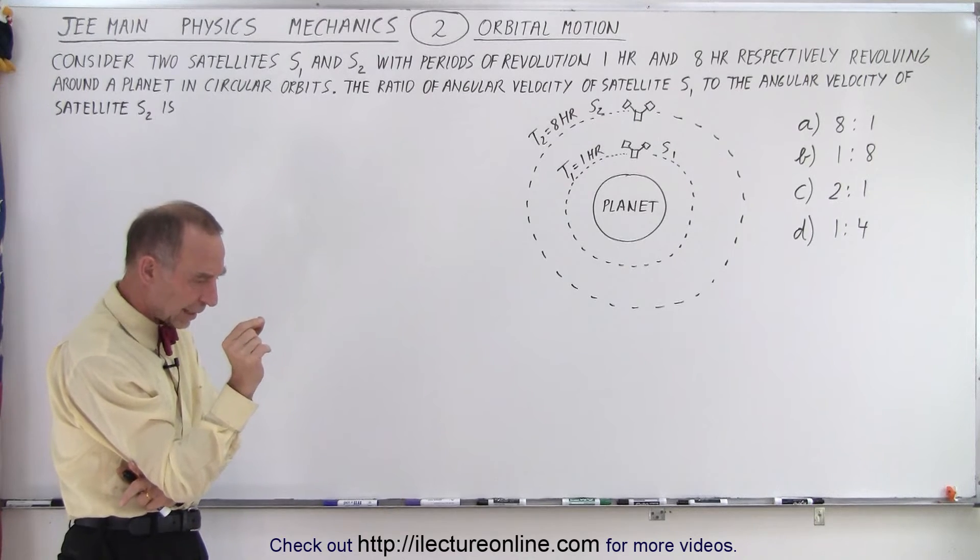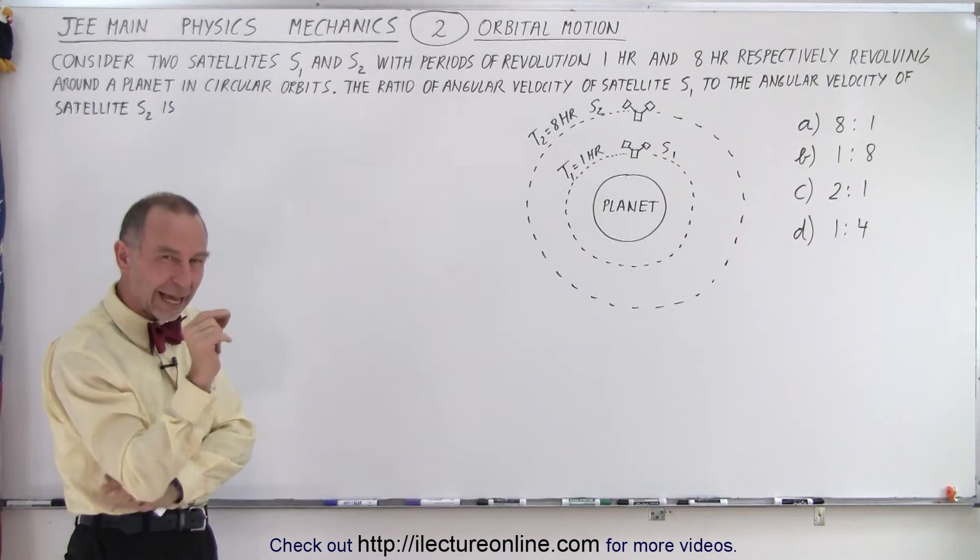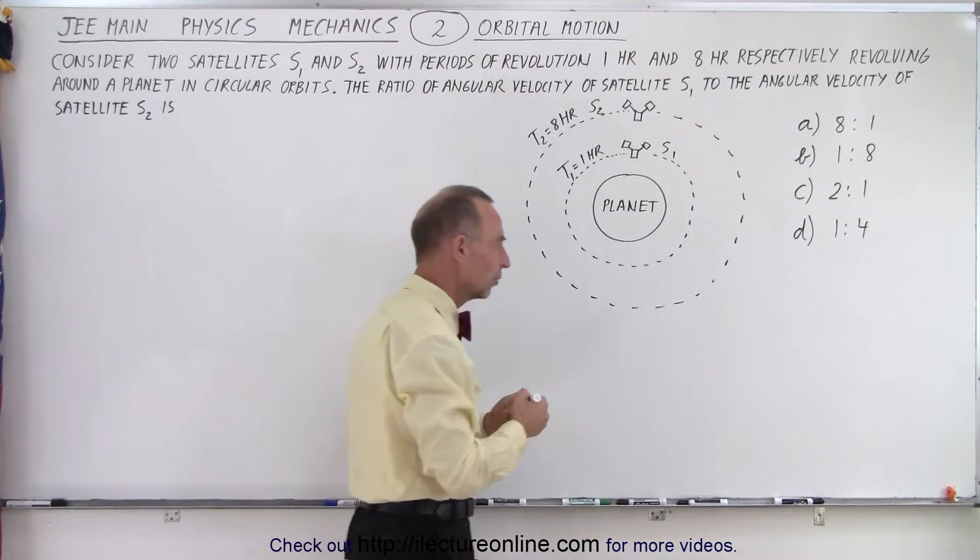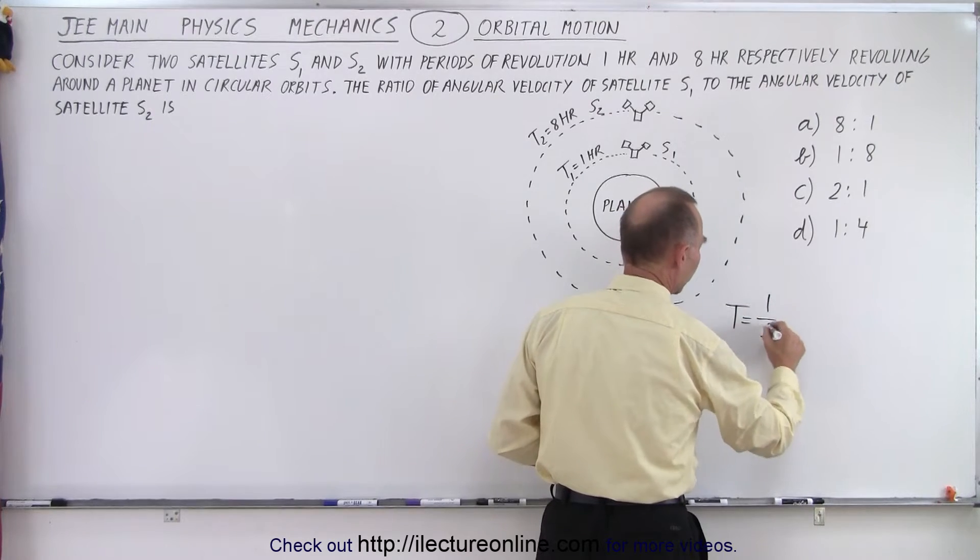Alright, so the concept here is the relationship between period, frequency, and angular velocity. So it turns out that the period is equal to 1 over the frequency, the frequency being of course the number of times that goes around per unit time.